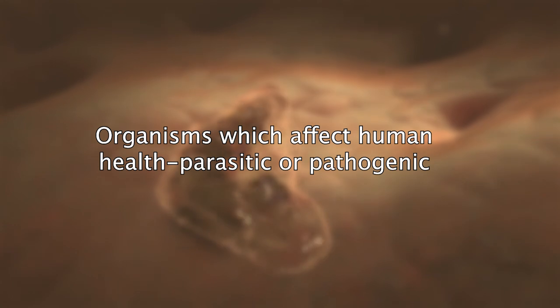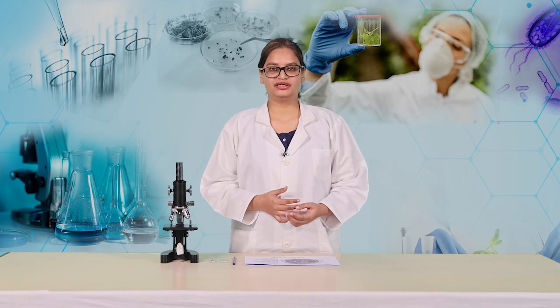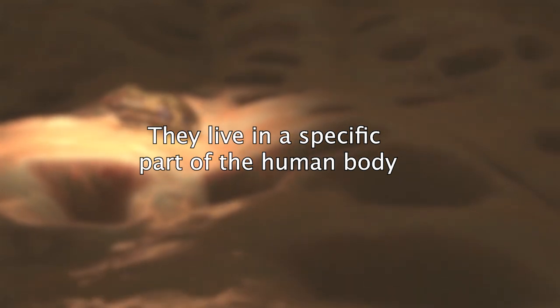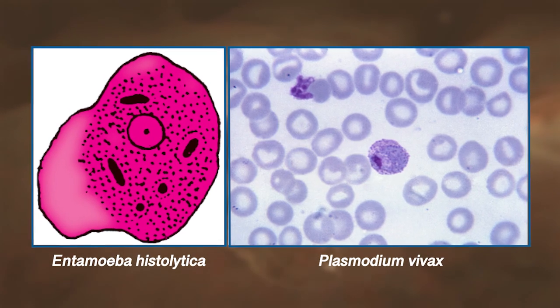Hello dear learners, in this session we are going to identify some disease-causing organisms and the symptoms of the diseases. There are a large number of organisms which affect human health; they are either parasitic or pathogenic to human beings and cause diseases. Each of these organisms can be identified by specific features based on which they are classified. They live in a specific part of the human body and have precise food requirements. These organisms cause various diseases which are characterized by specific symptoms. Let us study two such organisms: Entamoeba and Plasmodium.